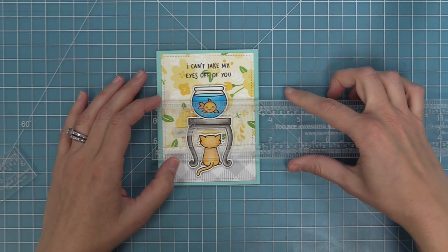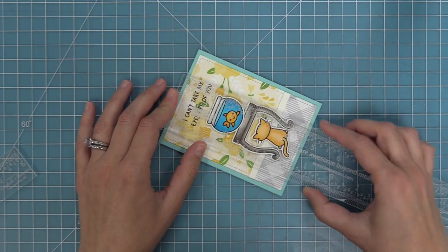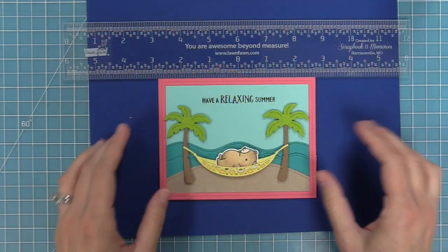I did the same thing here. So I used a 4 bar stitched rectangle and I wasn't sure exactly how big I wanted my card. I measured, I liked the 1 1/8 of an inch, and I was able to cut the perfect card base.